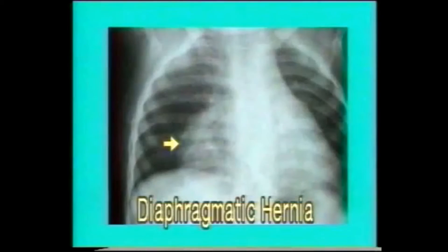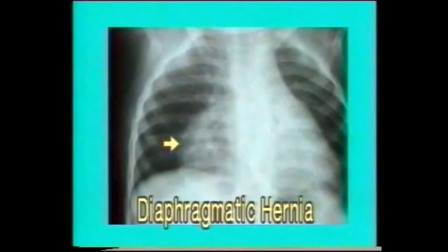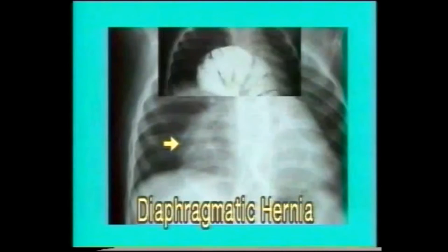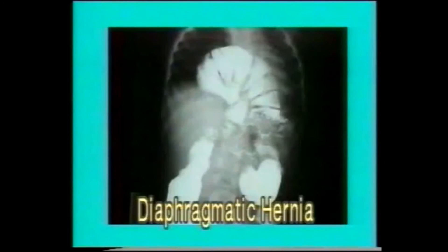This X-ray shows opacity at the right cardiophrenic angle with convexity upwards. This is likely to be a diaphragmatic hernia, as we saw in the section on mediastinal masses. A barium meal shows that the colon is herniating through the diaphragm and lying in the mediastinum and chest, confirming that this is a diaphragmatic hernia.